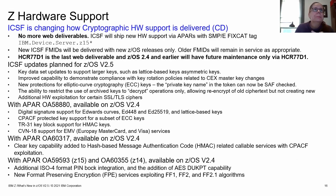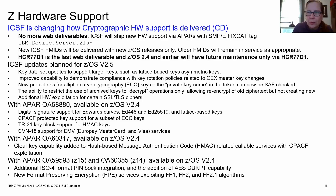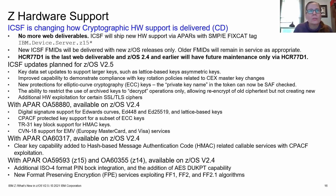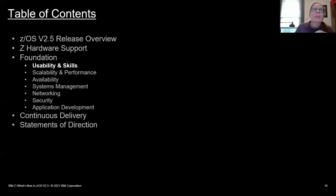For crypto on z15: we're changing how we deliver crypto hardware support. We're no longer doing web deliverables that you have to acquire, apply, and accept as FMIDs. Instead, all crypto support will go into PTFs, and you can identify them using a fix category — just like other PTFs for new hardware. So crypto is now joining the fix-cat family, which should make it much easier for everyone. There are also enhancements for more signature types and HMAC support.